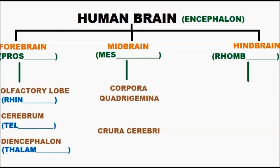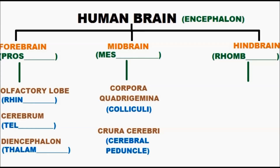The midbrain consists of the corpora quadrigemina and crura cerebri. The corpora quadrigemina contains the colliculi, and the crura cerebri are called cerebral peduncles. The hindbrain consists of the cerebellum, pons varolii, and medulla oblongata.